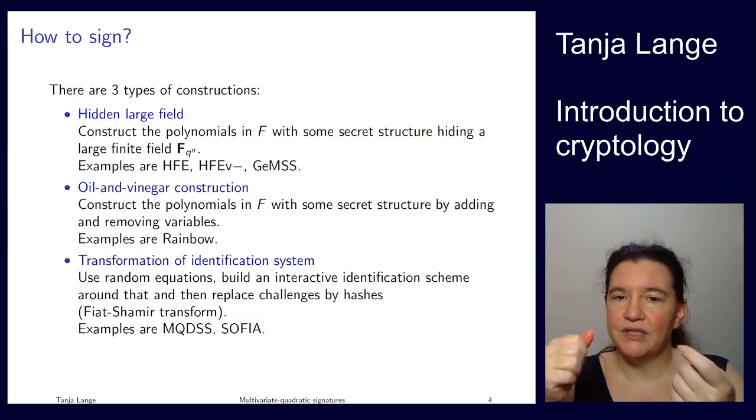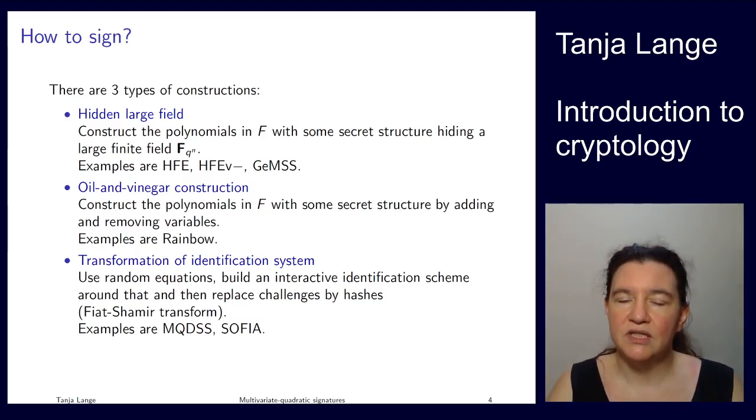Or you will also just modify how the systems are working. Because if you would know something about the variables. If you have kind of dummy variables plugged in. Then it would be easier to solve. So the latter one is the idea behind the oil and vinegar construction. And Rainbow is one of the NIST round three finalists. So that is using that construction. And for the other one HFE stands for hidden field equation.